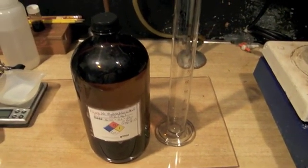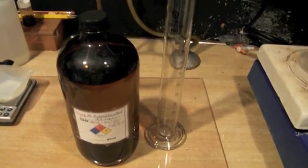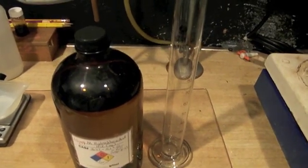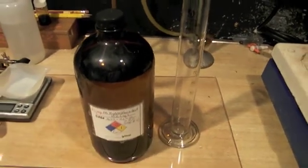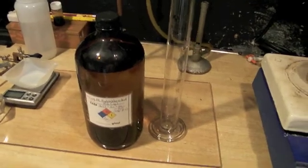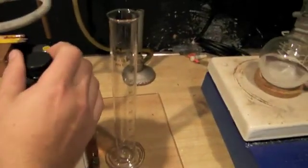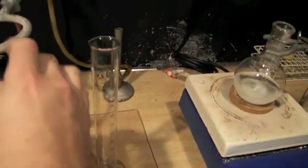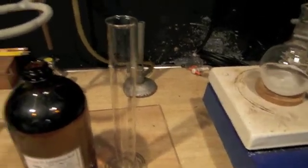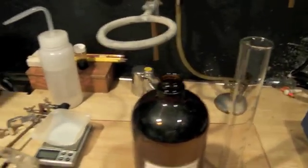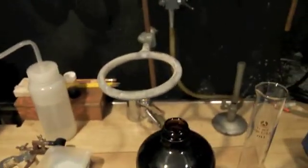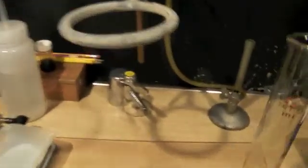The next step is to add a stoichiometric quantity of the hydrochloric acid. I have 10.42 molar hydrochloric acid. You should adjust your quantities accordingly. In this case, I will measure out 40 milliliters of the 10.42 molar hydrochloric acid into this glass graduated cylinder.